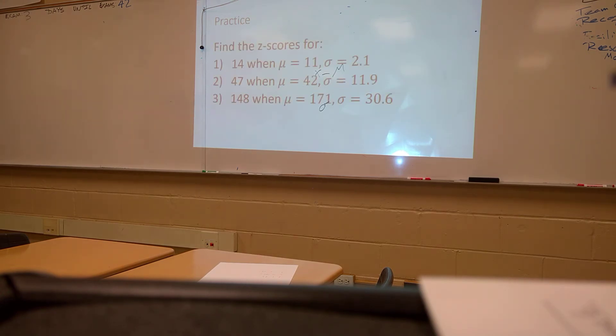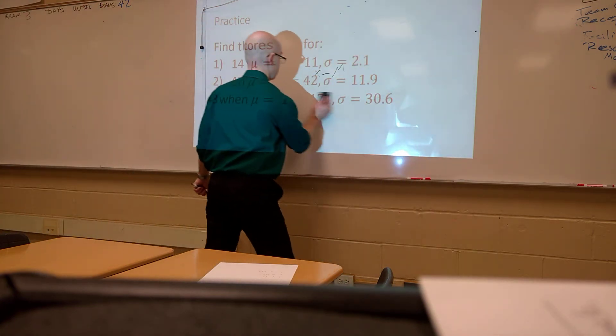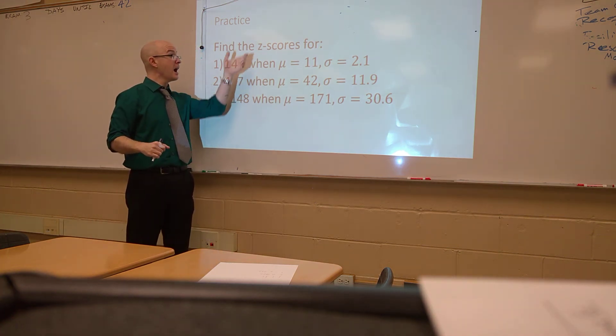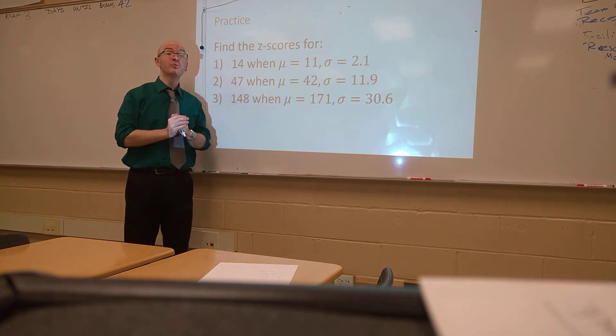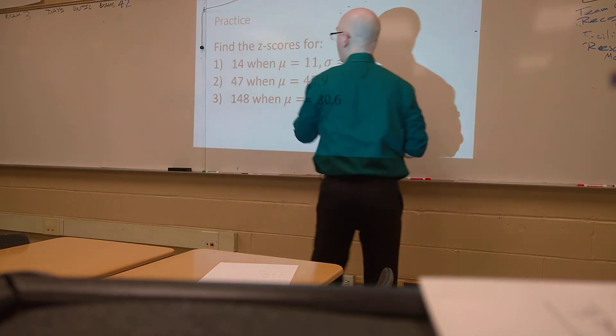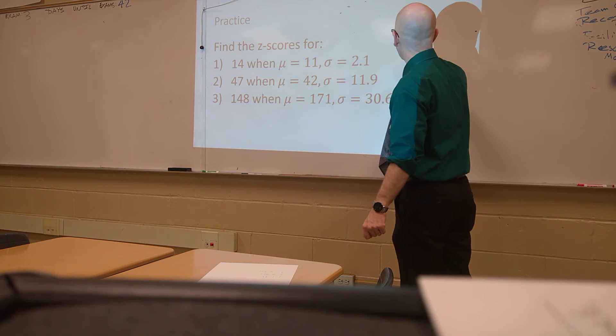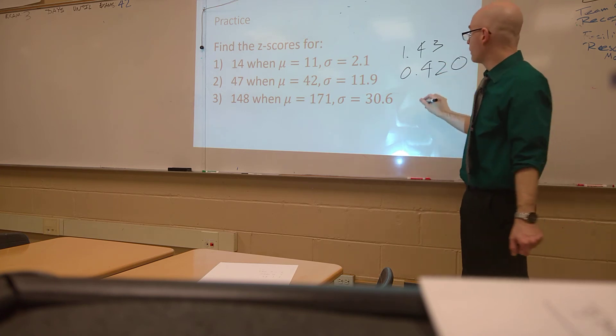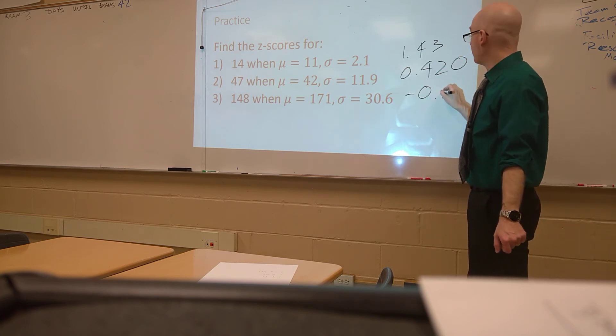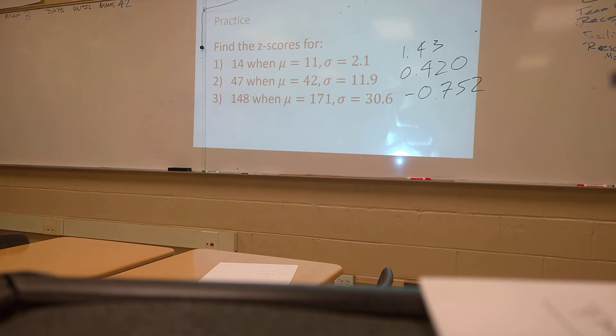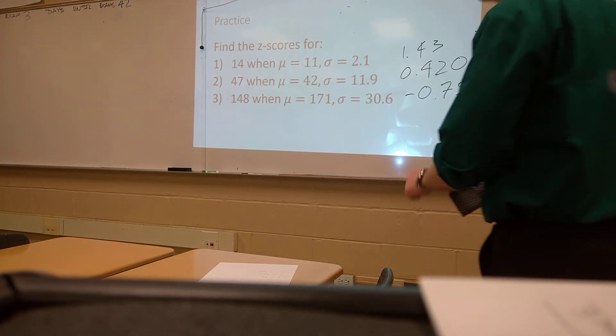So, you give it a try. Now it's your turn. Take a look at these. Pause the video. And after you have calculated these, unpause it. You can pause right now. I will wait here patiently. All right. Are you back? Let's take a look at what these are. For number 1, we should have had a z-score of 1.43. For number 2, we should have had a z-score of 0.420. And for number 3, we should have had a z-score of negative 0.752. That should be what we've got.